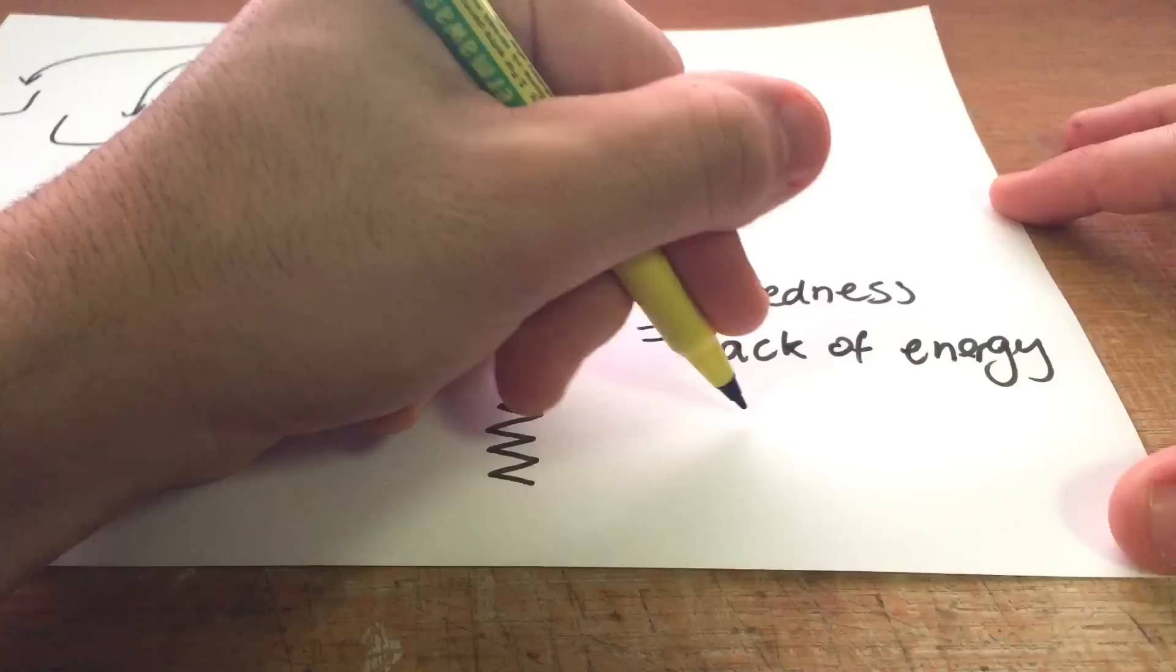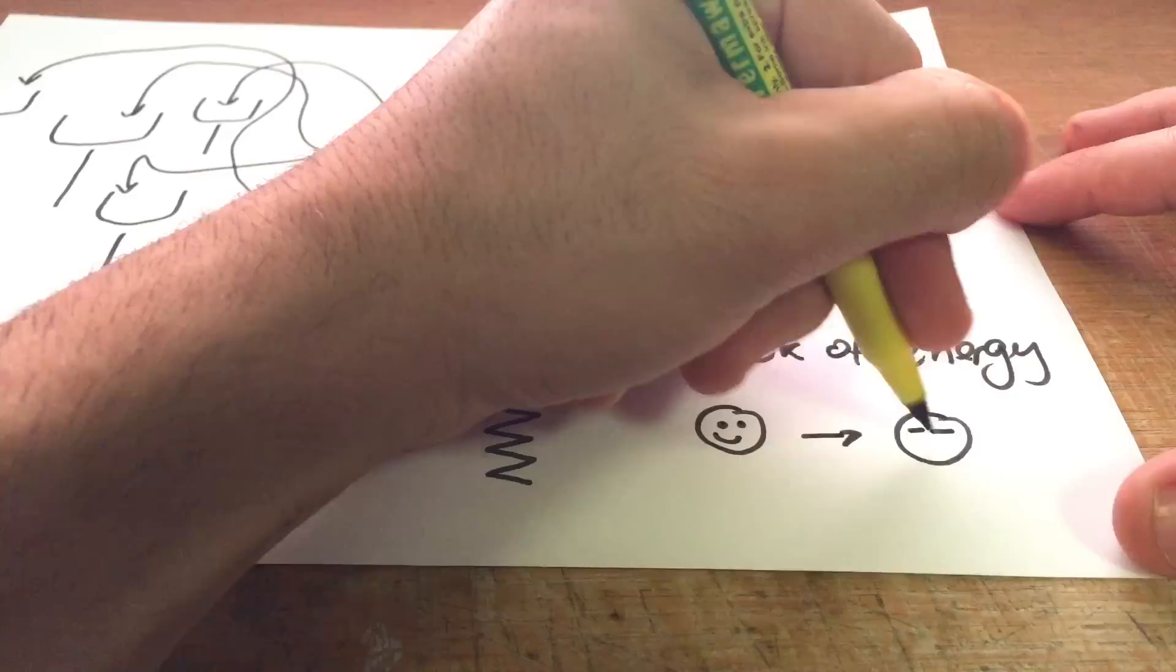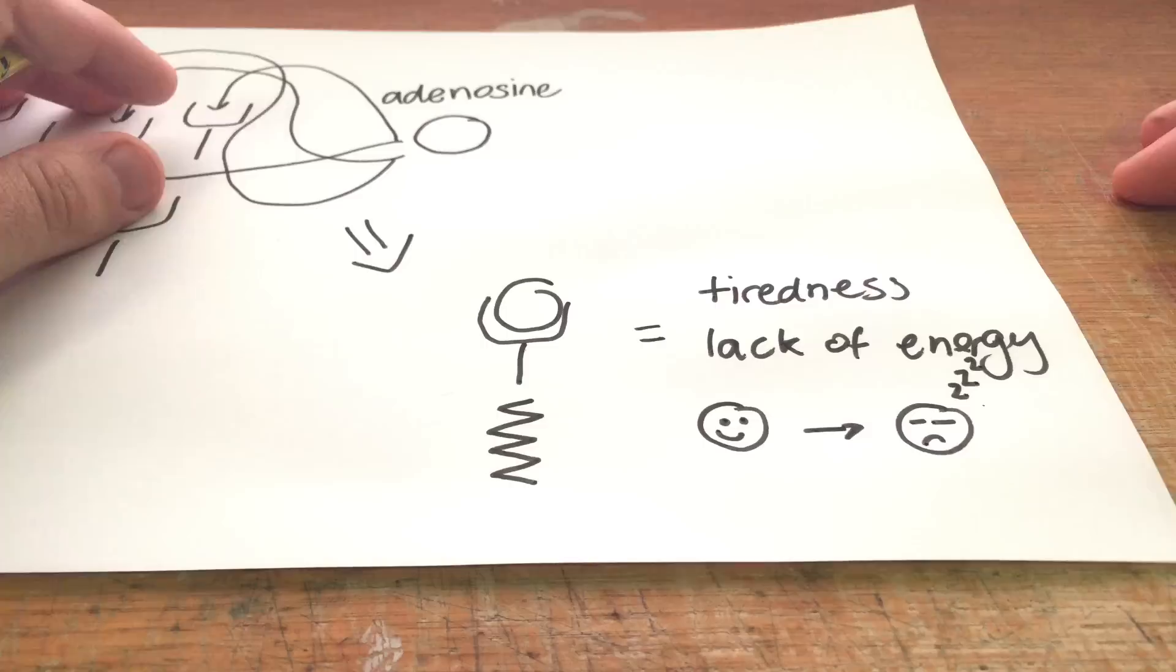So I'll just illustrate that with a little cartoon figure of how our body or how our brain basically changes from when adenosine binds to its receptors. As you can see we get sleepier.